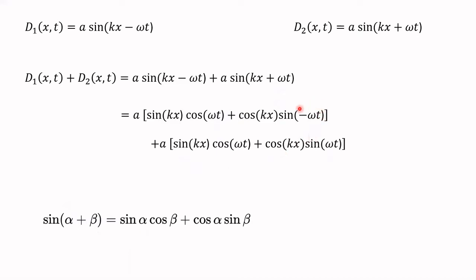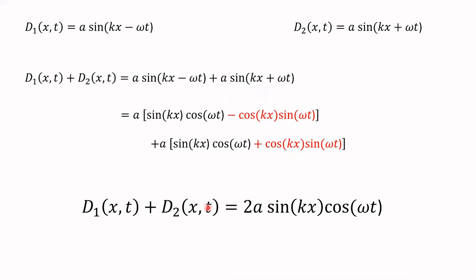Now the two sine terms sum to zero — great when you get cancellation. We just add the remaining two cosine terms. So the total displacement is 2A·sin(kx)·cos(ωt). Let's take some time to look at this function and see that it really does describe a standing wave. There are two components. Your book calls 2A·sin(kx) the amplitude function, because each little particle on the string oscillates up and down with its own amplitude — and that amplitude depends on where you are on the string.